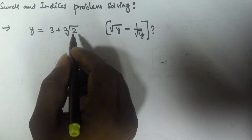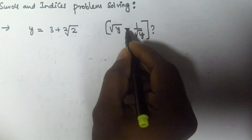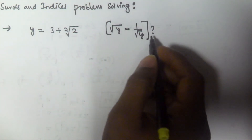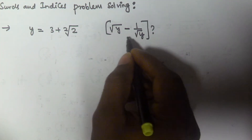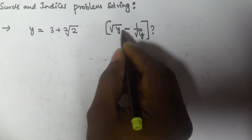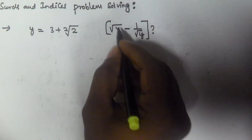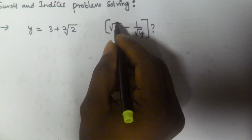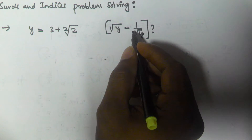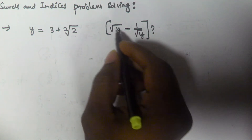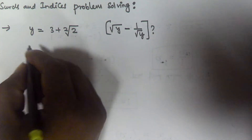y is equal to 3 plus 2 root 2 is given, and we have to find the value of root y minus 1 by root y. Whenever you see a problem like this, instead of finding root y minus 1 by root y directly, you find the square of this expression to eliminate the square root.